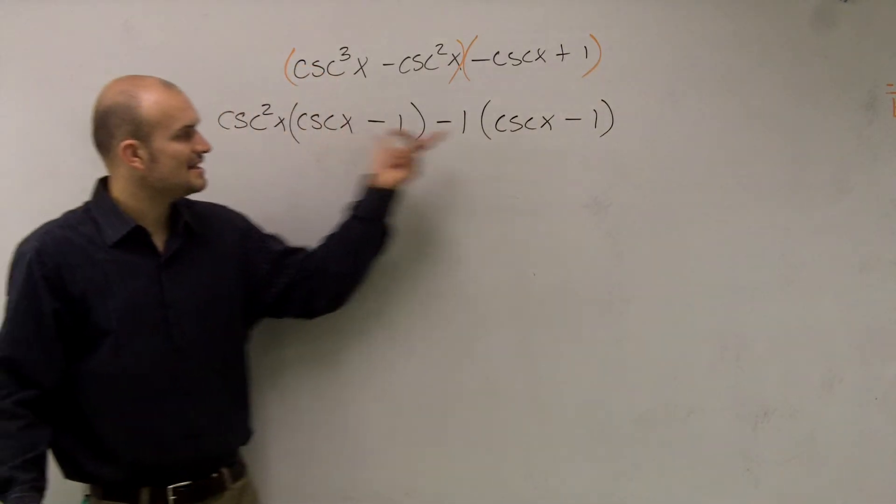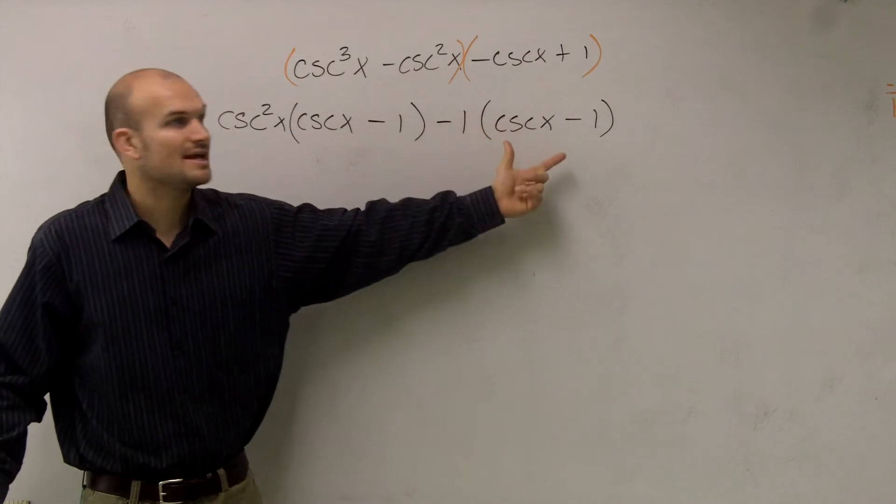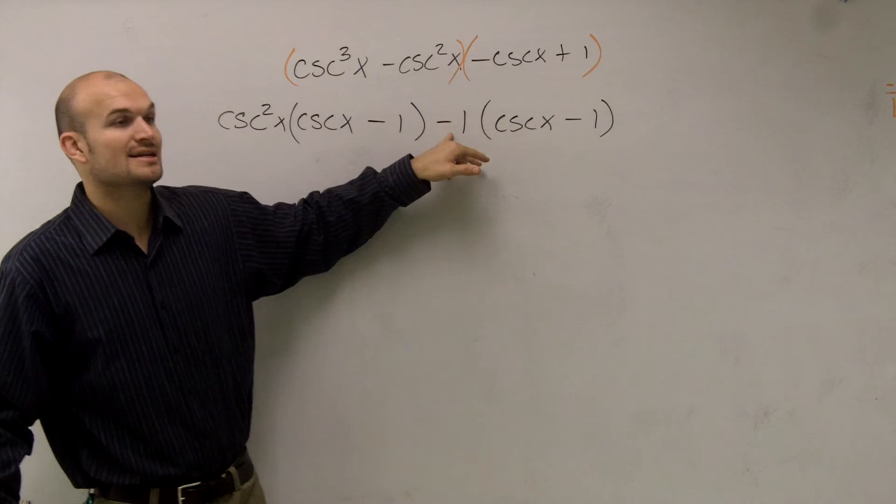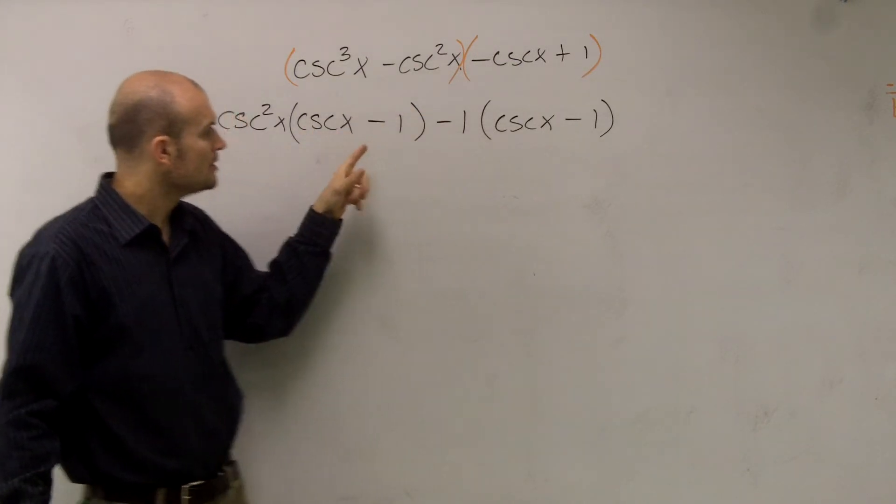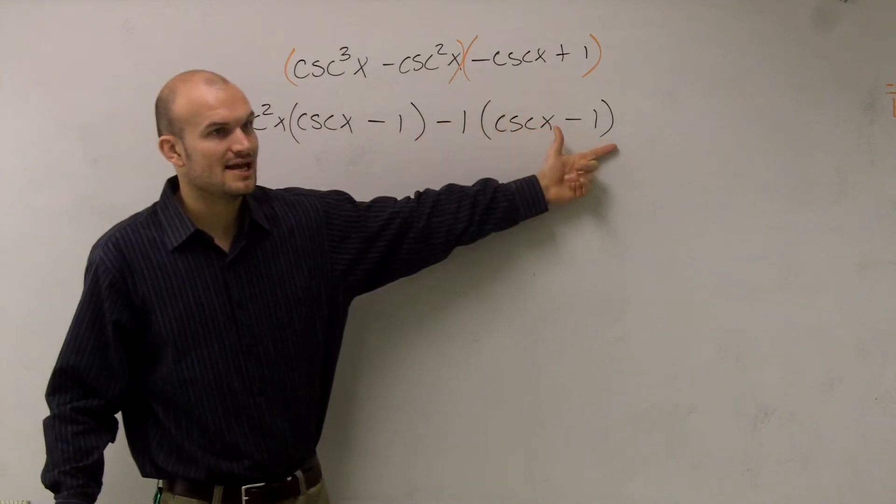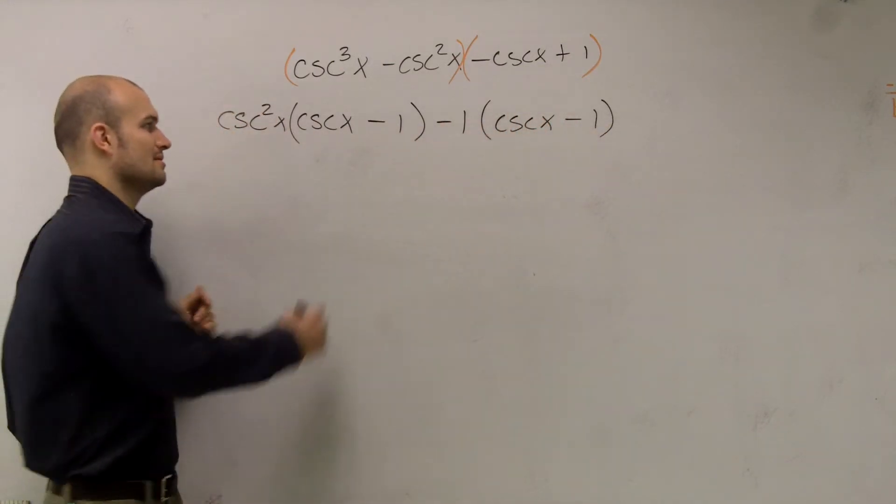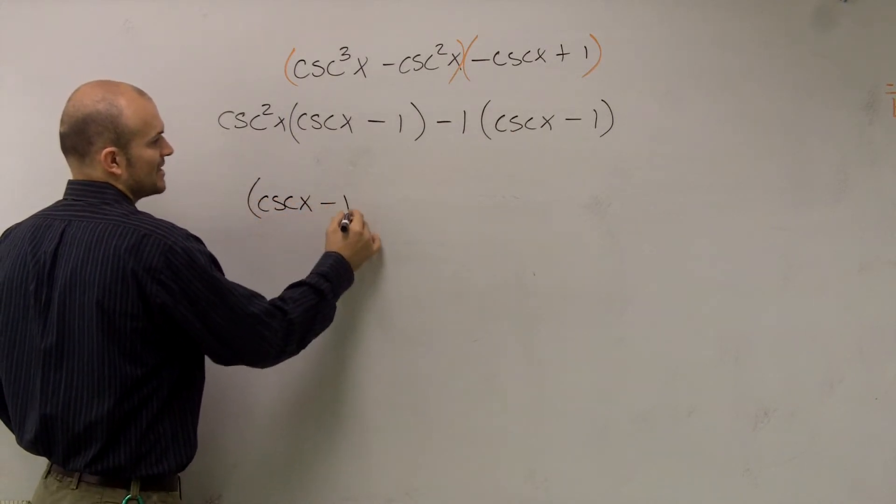So now, do you guys see that these are exactly the same? And that's what I want. If they're not exactly the same, then you can't do what we're about, you can't factor them out. So that's why I factor out a negative 1 and not just a regular 1. So now that these are exactly the same, we're going to factor out both of these terms. So I'm going to say now I'm going to factor out cosecant of x minus 1.